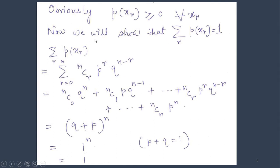Now we will prove the second property of Binomial Distribution. Let us expand this expression taking r values from 0 to n. The first term for r=0 is nC0 * p^0 * q^n = q^n. The second term for r=1 is nC1 * p^1 * q^(n-1). The nth term is nCn * p^n * q^0 = p^n. This is nothing but the Binomial Theorem — we can write (q+p)^n, which equals 1^n = 1, since p+q=1. Hence, the second property of the PMF of Binomial Distribution is proved.